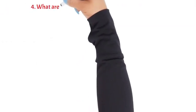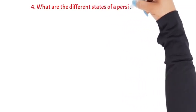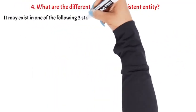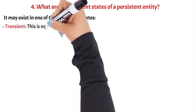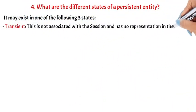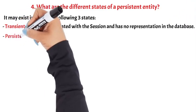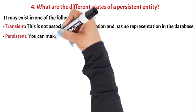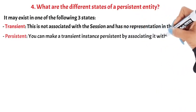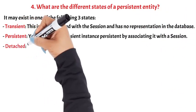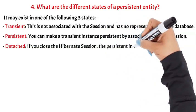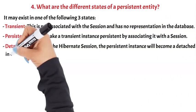Question 4: What are the different states of a persistent entity? It may exist in one of the following three states. Transient: This is not associated with the session and has no representation in the database. Persistent: You can make a transient instance persistent by associating it with a session. Detached: If you close the Hibernate session, the persistent instance will become a detached instance.